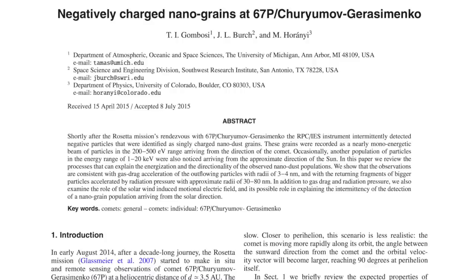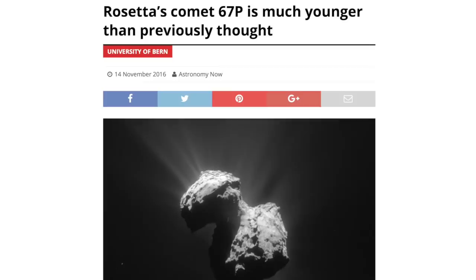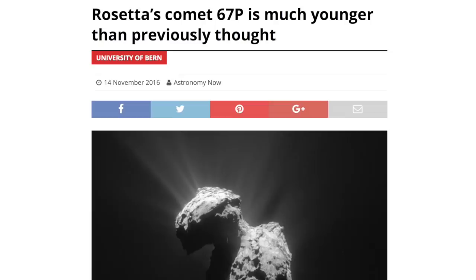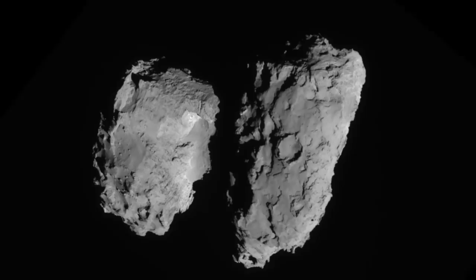As we reported last year, comet specialists now acknowledge that 67P cannot be billions of years old, as was commonly believed. It also seems clear that the double lobes and rocky terrain of 67P present insurmountable problems for a theoretical model once considered unassailable.